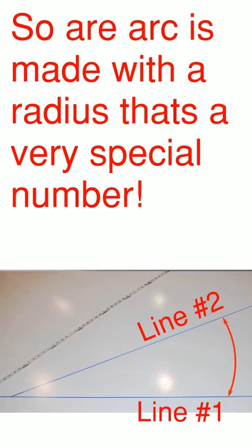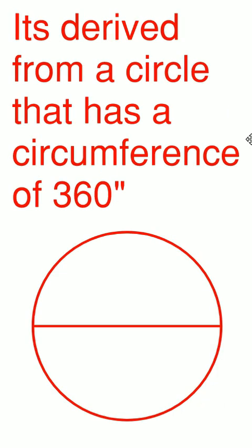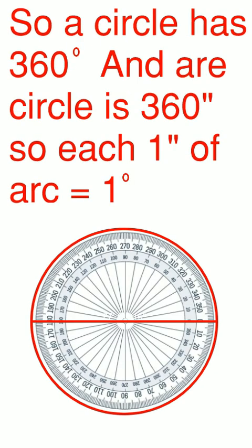So our arc is made with a radius that's a very special number. I'll explain. The number is going to be derived from a circle that has a circumference of 360 inches all the way around it. So a circle has 360 degrees and our circle is 360 inches of circumference. So each one inch of arc will equal one degree.